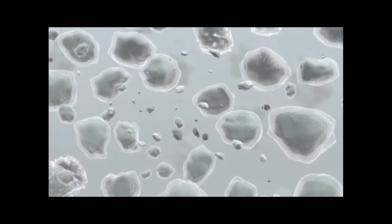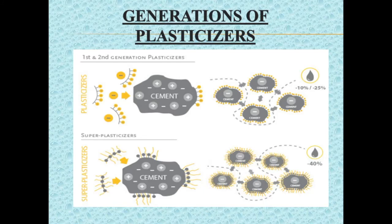Regarding generations of plasticizers: lignosulphonates are the first generation plasticizers. These additives, known as mid-range water reducers, attach themselves to the surface of cement particles which carry both positive and negative charges. Plasticizer polymers, which are negatively charged, counterbalance the positive charges on the cement surface, making the entire surface negative. This triggers a physical effect causing negatively charged cement particles to repel each other, creating a dispersion effect. This makes the mix more workable and allows reduction of water-cement ratio by about 10%.